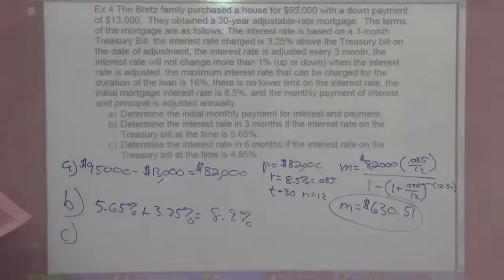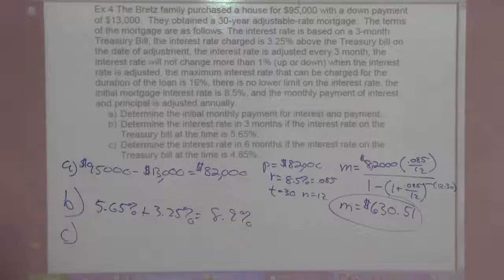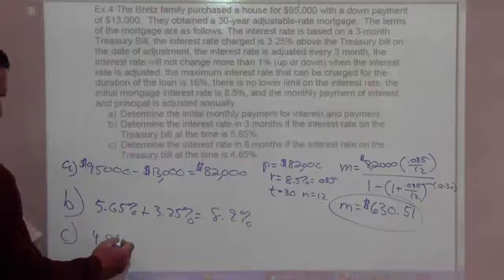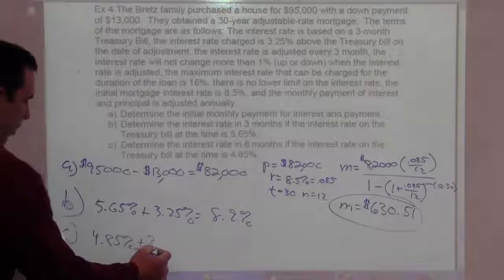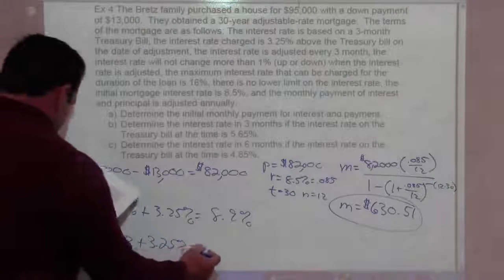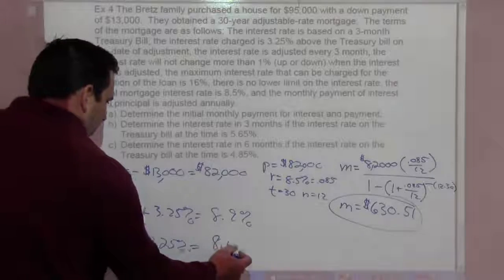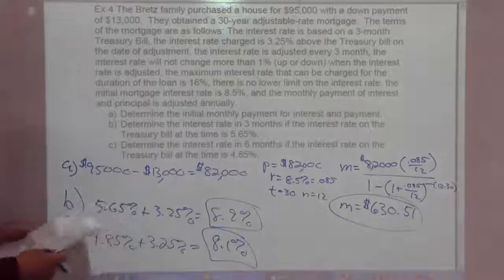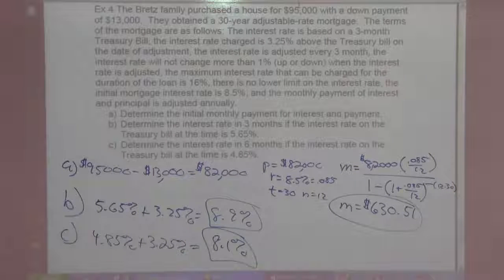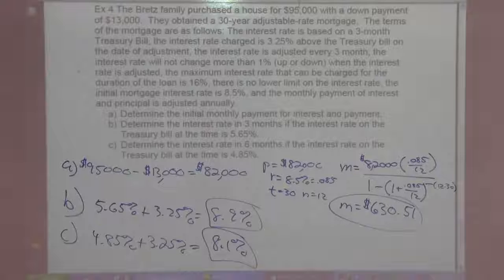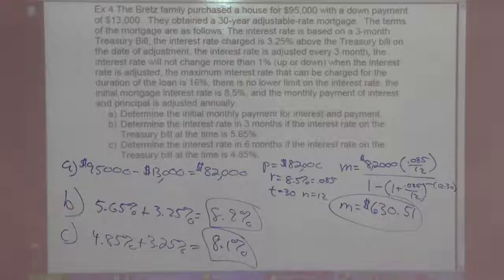And for C, determine the interest in six months if the interest rate on the Treasury bill is 4.85, so it's 4.85% plus our 3.25% above the Treasury bill rate is going to be 8.1%. So I'm going to move this up in just a moment and talk about some final things. Feel free to pause.